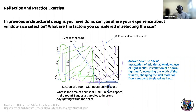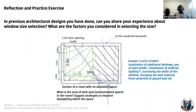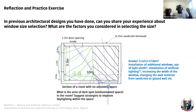Other strategies include increasing the width of the window, or changing the wall material from masonry to a glazed wall. When you change to a glazed wall or add another window, you must also consider heat loss and the temperature level that will be available in your space. As an architect you have to make decisions that influence the lives and health of your occupants.